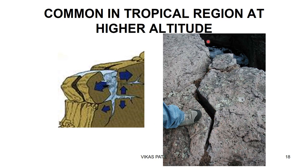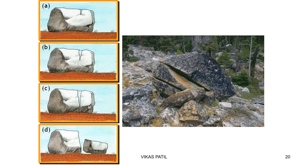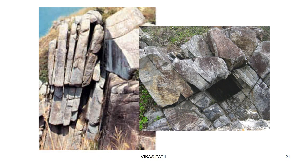Frost weathering is very common in lower latitudes but at higher altitude. It's very common in the Himalayas, where during daytime temperatures rise above the melting point and at night they go below the freezing point. It will not be common in polar regions because there the temperatures don't rise enough. Here you can see pavement disturbed because of frost weathering — and here are additional examples of frost weathering.